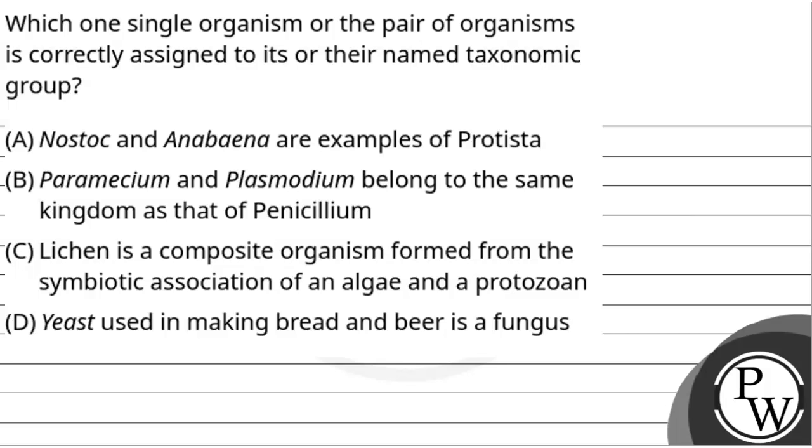Hello, let's read the question. Which one single organism or the pair of organisms is correctly assigned to its or their named taxonomic group? Option A: Nostoc and Anabaena are examples